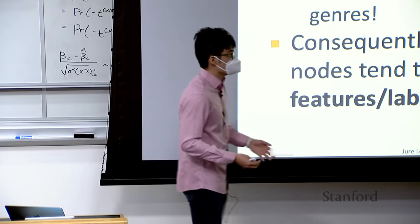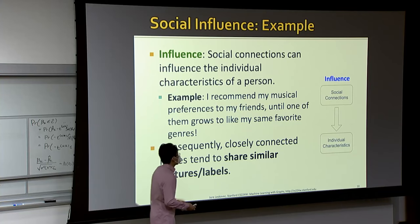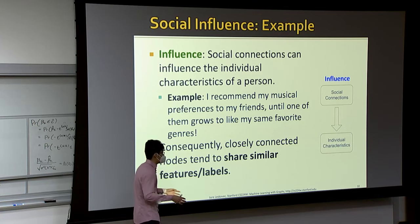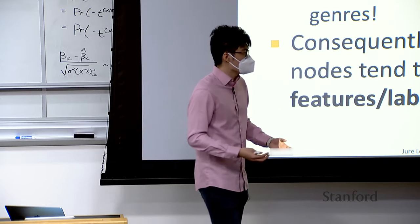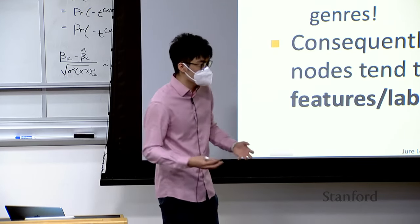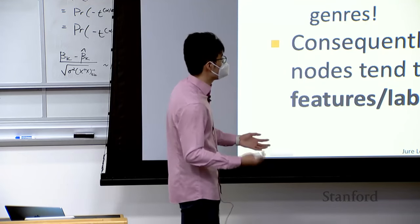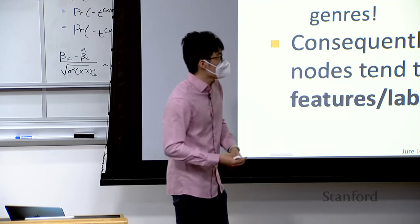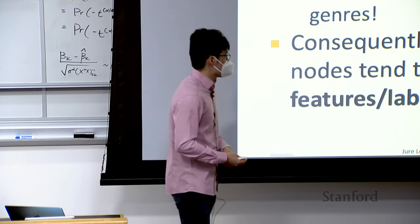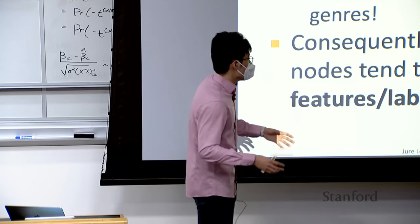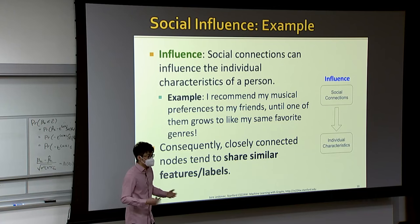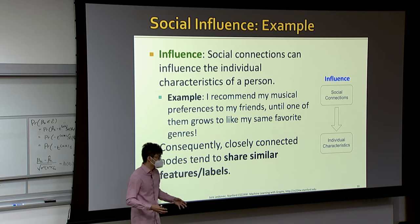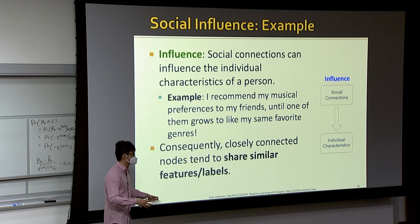Another motivation is influence: social connections can influence individuals' characteristics. For example, if a group of people connects together and shares interests, they influence each other — if I have a certain musical preference, that may grow the same interest in my connected peers. Consequently, because influence exists, nodes that are closely connected may tend to share similar features and eventually similar labels. This is another way to understand why homophily and influence appear in networks.